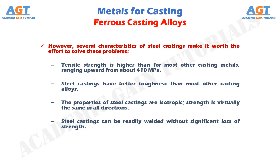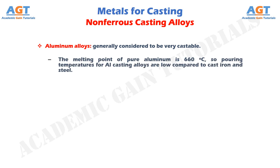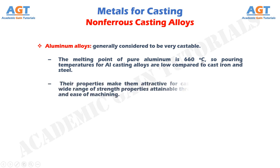The non-ferrous casting alloys. Aluminum alloys are generally considered to be very castable. The melting point of pure aluminum is 660 degrees Celsius, so pouring temperatures for aluminum casting alloys are low compared to cast iron and steel. Their properties make them attractive for castings: lightweight, wide range of strength properties attainable through heat treatment, and ease of machining.